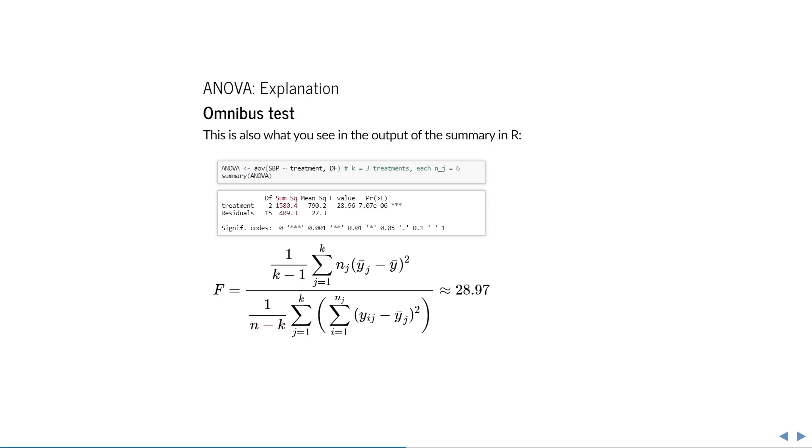The next column shows the sum of squared differences. For treatment, this is the sum of squared differences from the group mean to the overall mean, multiplied by the group size. For the residuals, this is the sum of squared differences from the observations to their group mean, summed for each group.